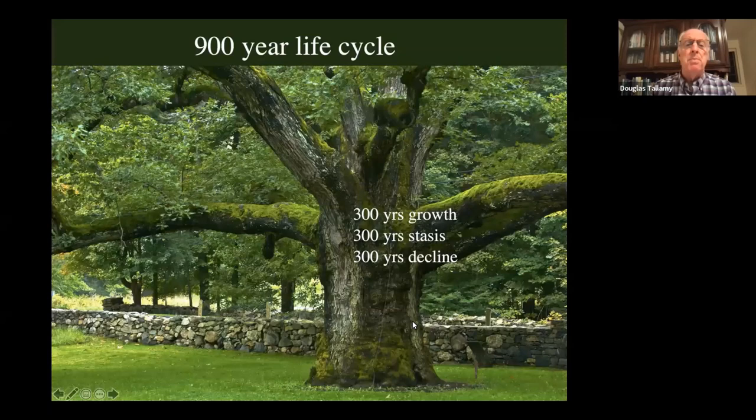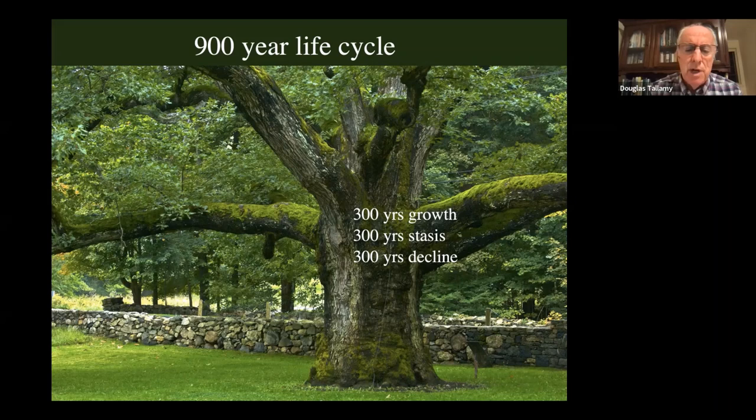Oaks live a long time — much longer than people think. The average life cycle of a healthy oak is 900 years: 300 years of growth, 300 years of stasis, and 300 years of decline. During each of those periods, they are contributing unique ecological services to the land around them.